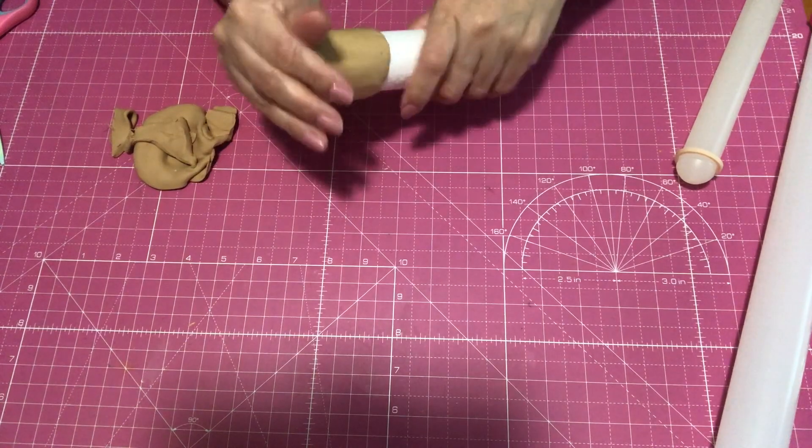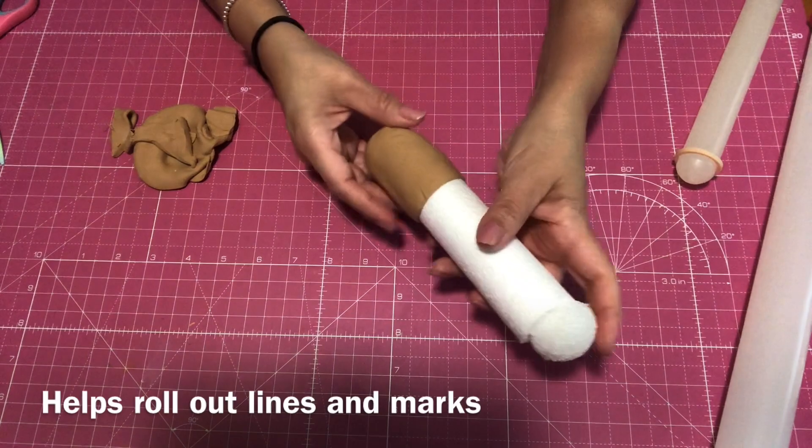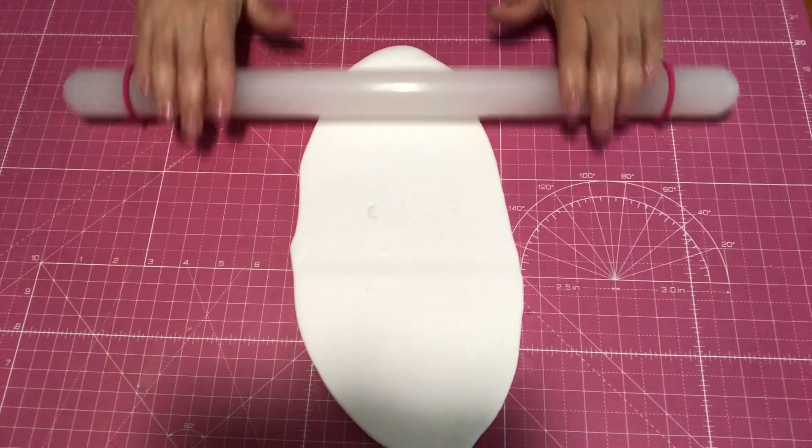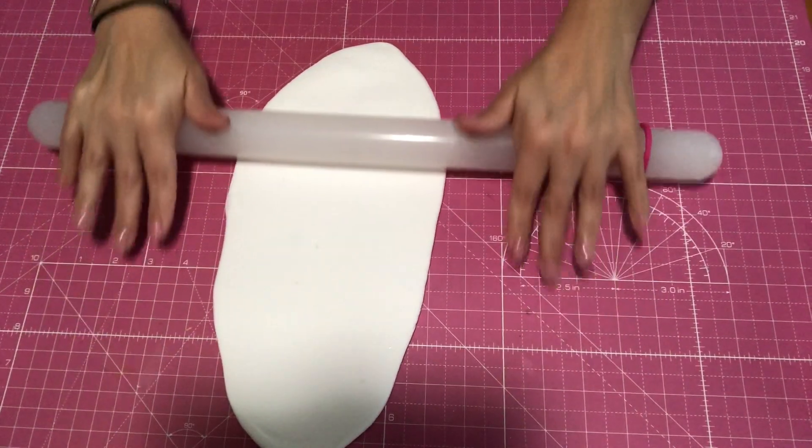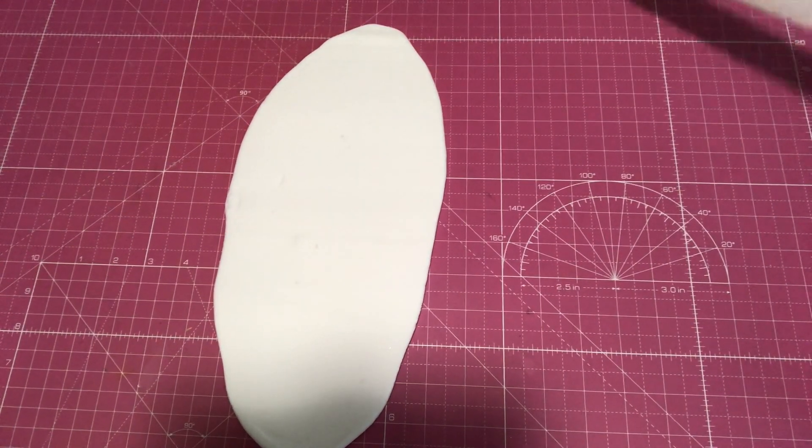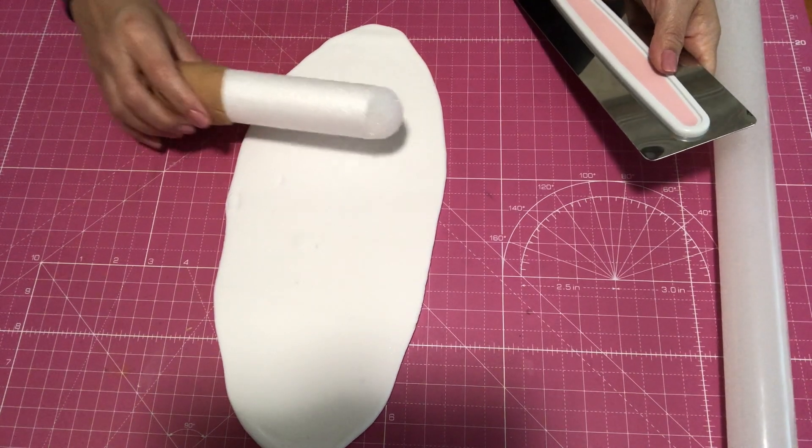The only thing I'm doing here is just going to wrap it halfway because the rest I'm going to use white clay. You can wrap the whole thing in brown if you want, but I feel like that's just going to be a waste of clay because we are going to be wrapping it in white clay as well.